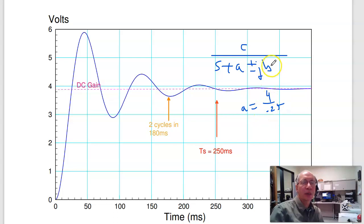B is the complex part of the pole—that's the frequency of oscillation. It's got, say, two cycles in 180 milliseconds, so B is two cycles in 180 milliseconds. That gives you Hertz. Anything in English units is wrong, so times 2π gives you radians per second.